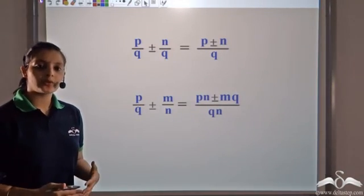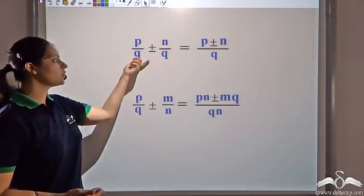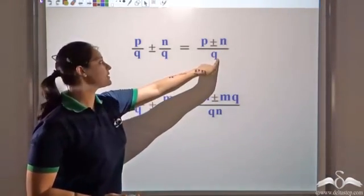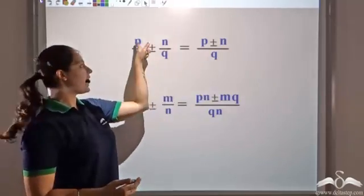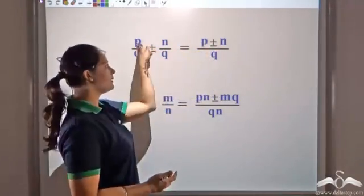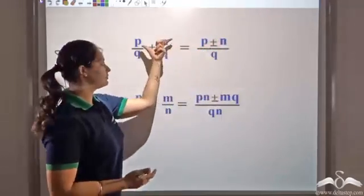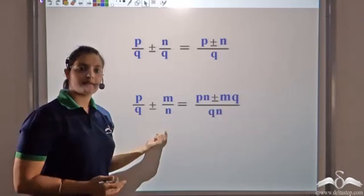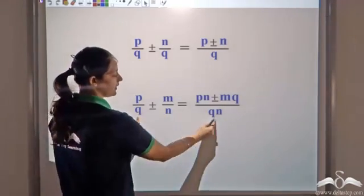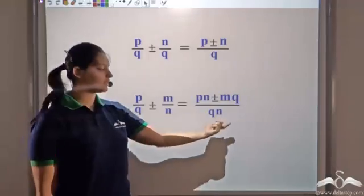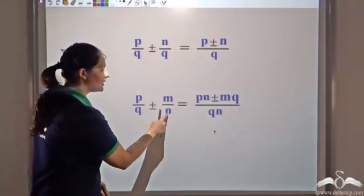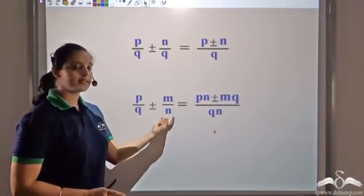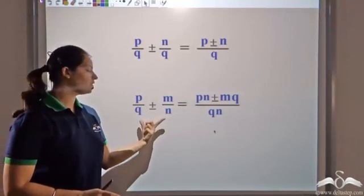We had seen how to add and subtract two rational numbers. For rational numbers with the same denominator, the denominator remains the same and you add or subtract the numerators, giving p plus or minus n. If the denominators are not the same, you make them equal by taking the LCM or multiplying them to get qn, then cross-multiplying: pn plus or minus mq.